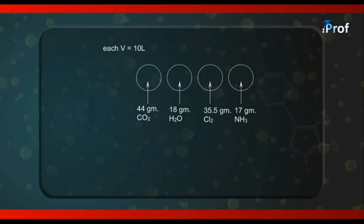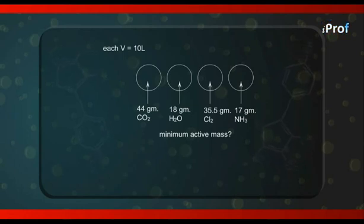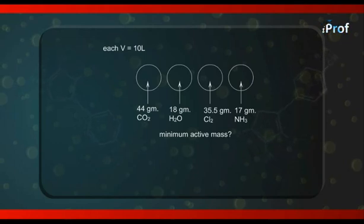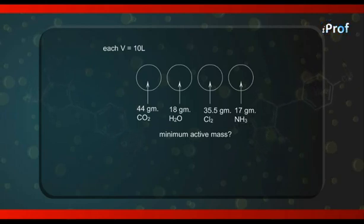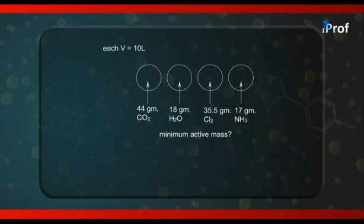The answer: if we calculate active mass in each vessel, for CO₂ it is 44/44 × 1/10 = 0.1 mole per liter. For water vapor, 18/18 × 1/10 = 0.1 mole per liter. For ammonia in the fourth vessel, 17/17 × 1/10 = 0.1 mole per liter. But looking at the third vessel containing 35.5 grams of chlorine gas...